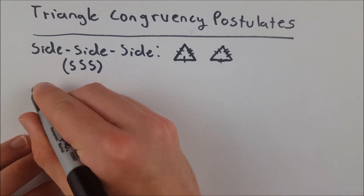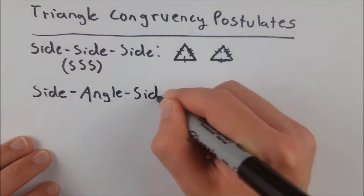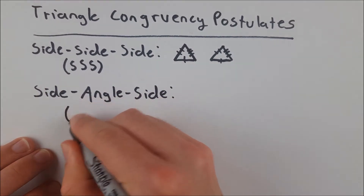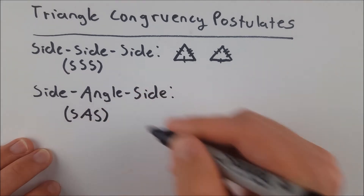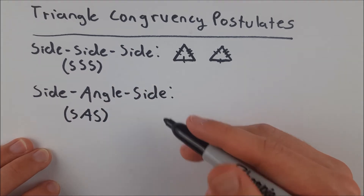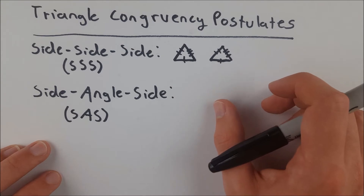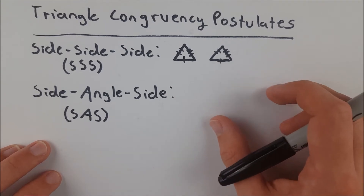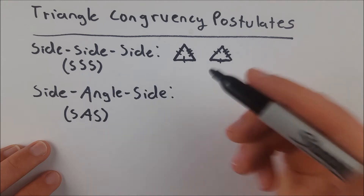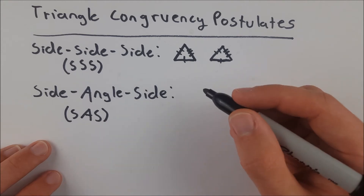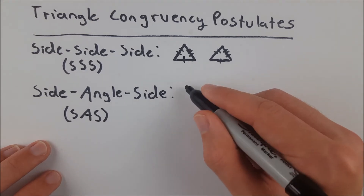Now we will look at side-angle-side, more commonly referred to as the SAS postulate — the side-angle-side postulate. This just states that if two triangles have two pairs of congruent sides, and the included angle of those sides is also congruent, then those triangles are congruent.